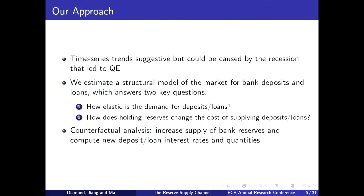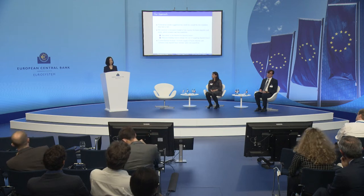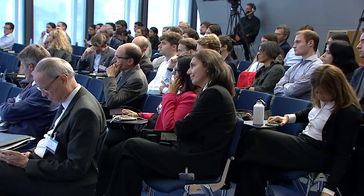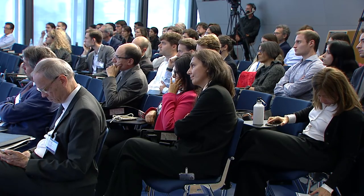Instead of looking at the time series, we want a framework estimated using variation unrelated to QE — something not related to underlying business cycle fluctuations and demand shocks. By estimating a framework with demand and supply, we can run a counterfactual where we only move reserve supply in the system and then observe how much bank lending, deposit taking, and mortgage lending changes. That's the goal of this paper.